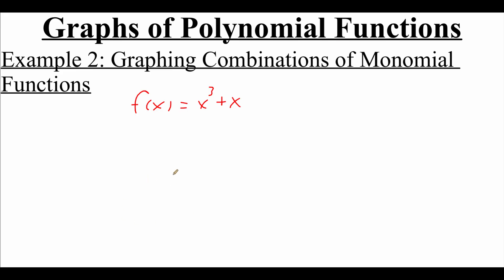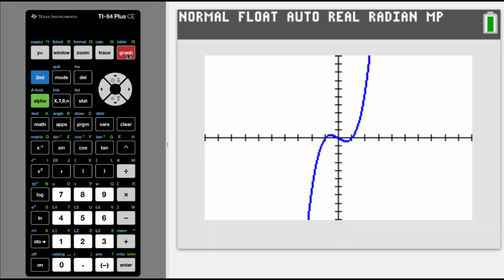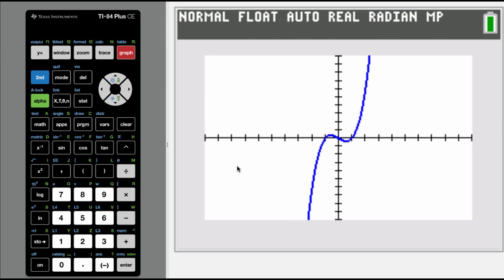Now I'm going to adjust the function a little bit and write g of x equals x cubed minus x — instead of adding x, we're subtracting x — to see how that affects the graph. When I hit graph, the shape still looks like a general cubic function, but now in the middle we've got part of the graph going down. The graph crosses the x-axis at three different places, giving us three zeros: one at negative one, one at zero, and one at positive one.